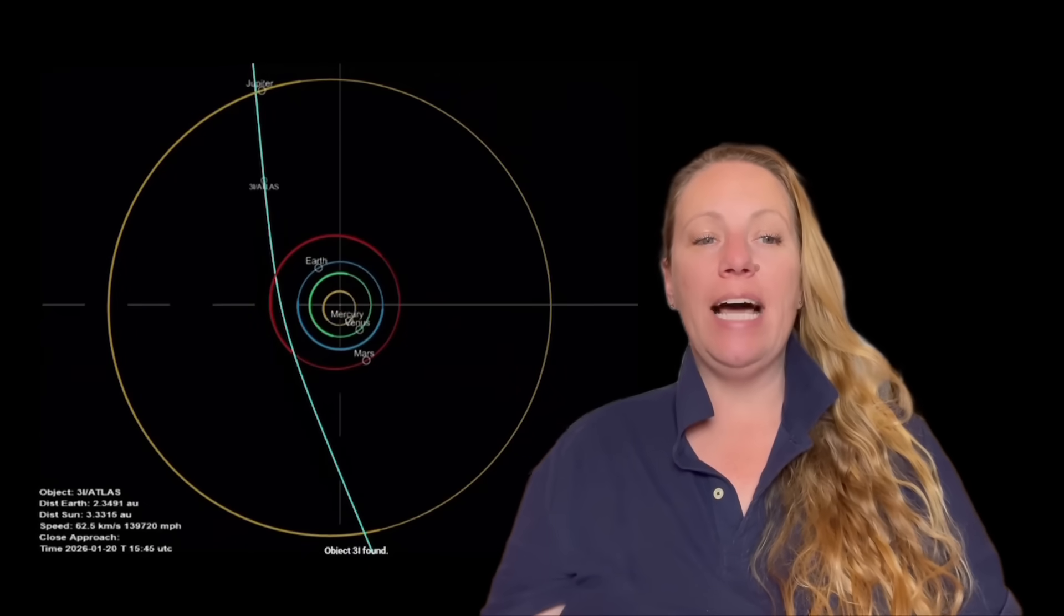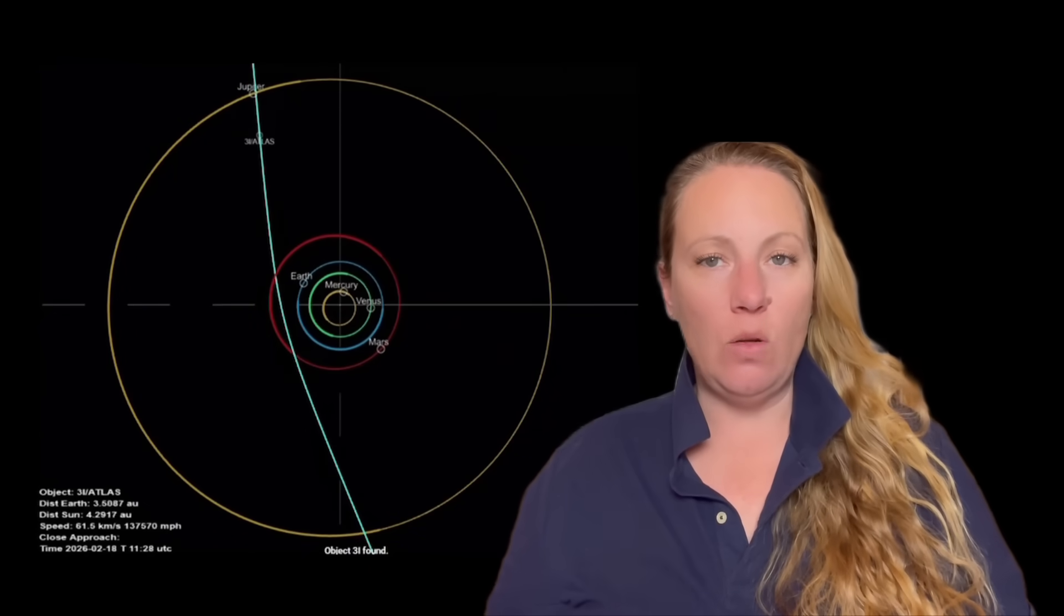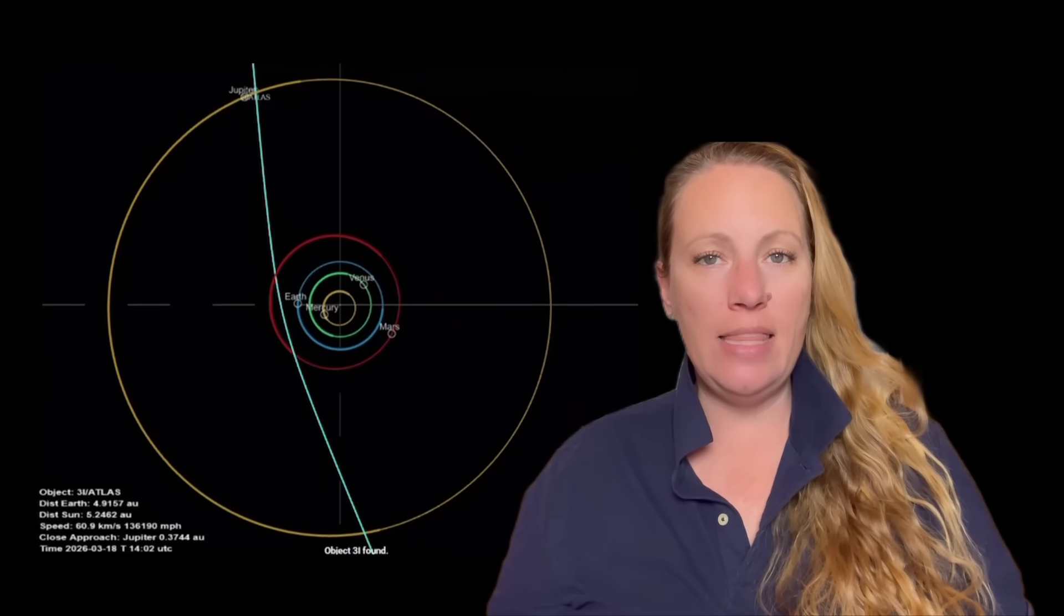We have an orientation of the plume around 3i Atlas in these high-res images that raises some questions, and newly discovered sideways lines. What is it? What is this in this video?